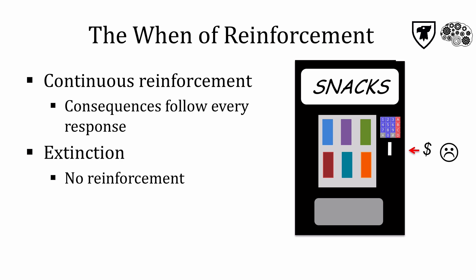Not surprisingly, responding usually declines dramatically under conditions of extinction. In terms of the when of reinforcement, continuous reinforcement and extinction are the two simplest scenarios. They are sort of like the on and off switches for operant behavior, but operant conditioning can work under more complex or varied schedules.